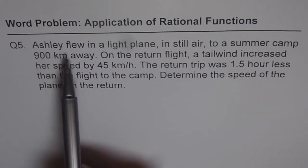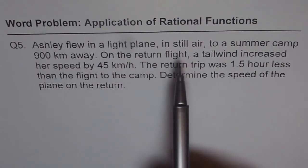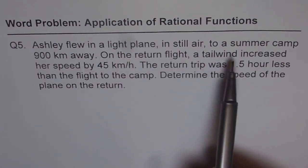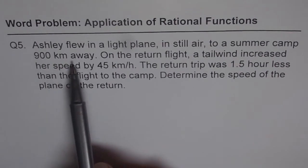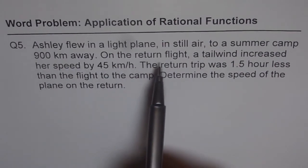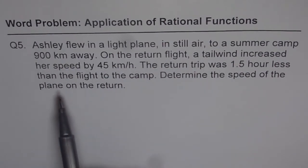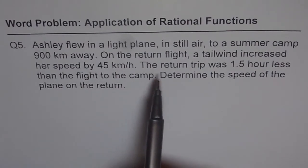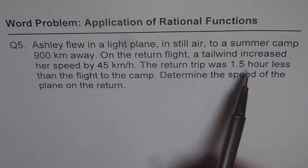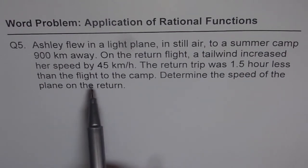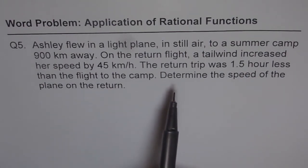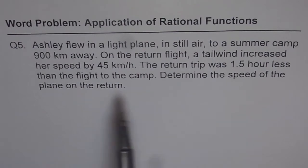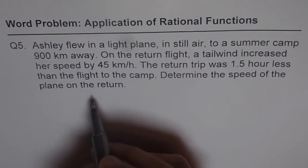Question is: Ashley flew in a light plane in still air to a summer camp 900 km away. On the return flight, a tailwind increased her speed by 45 km per hour. The return trip was 1.5 hours less than the flight to the camp. Determine the speed of the plane on the return. That is what we want to find.